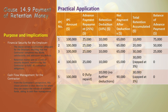As we progress to IPC numbers 2 and 3, the rhythm of deductions continues unchanged. The retention accumulates, reaching a crescendo at $30,000 — the 3% cap. This cap isn't just a number; it's a strategic fulcrum balancing the contractor's motivation against the employer's risk, a testament to the foresight embedded in FIDIC contracts. By IPC number four, a pivotal shift occurs: the advance payment is fully repaid. The balance hits zero, but retention remains at the $30,000 plateau — a silent guardian of quality.